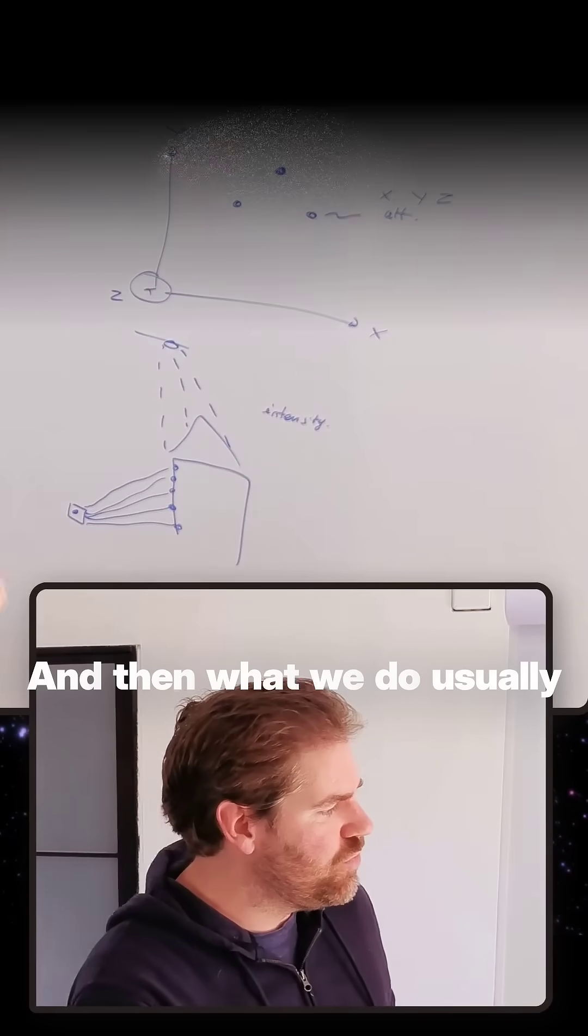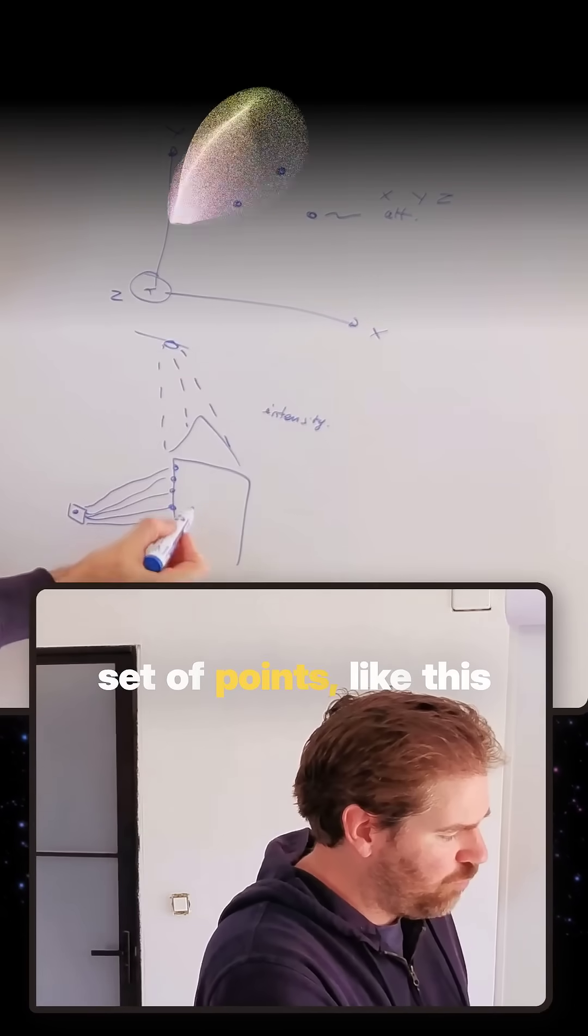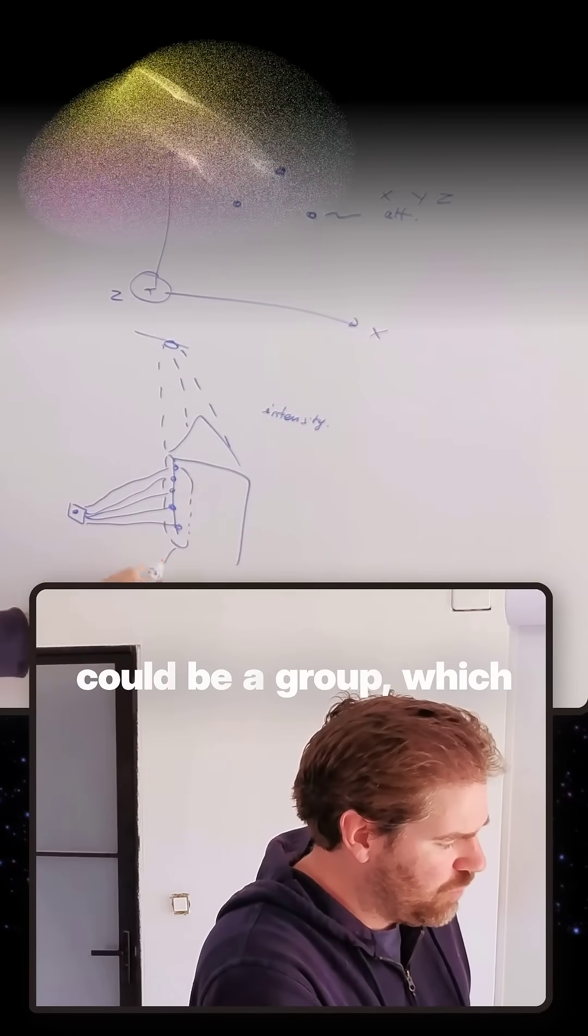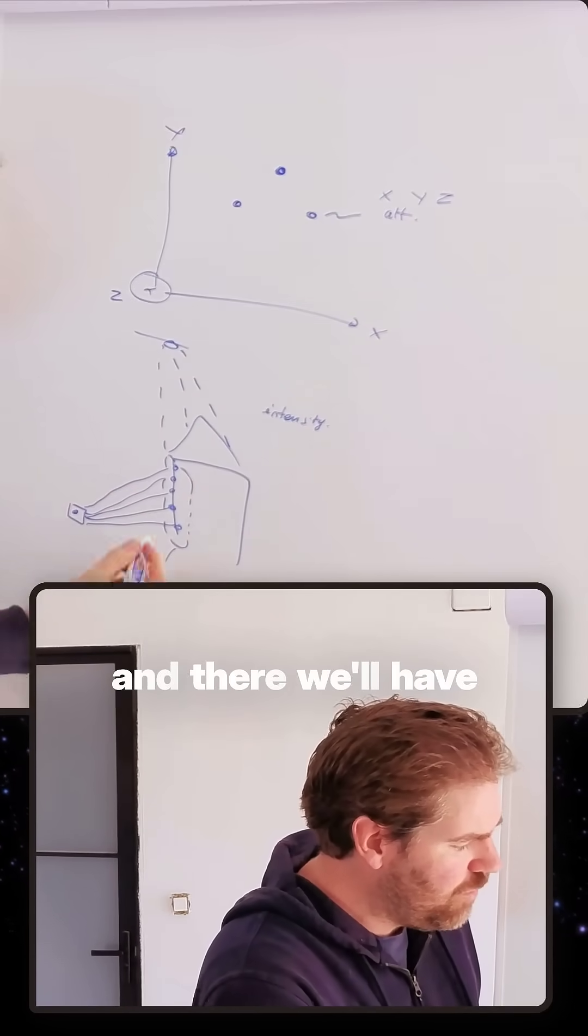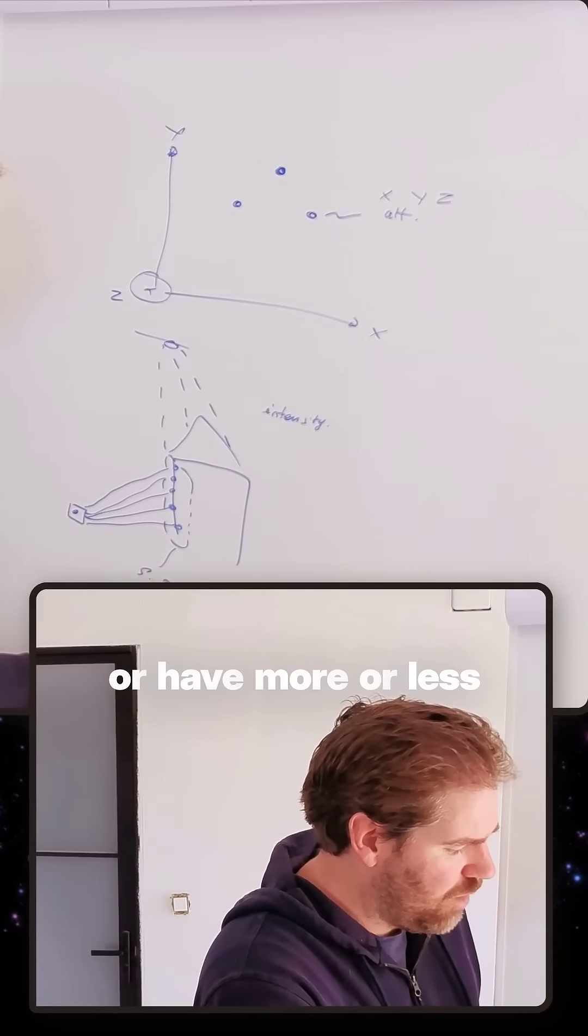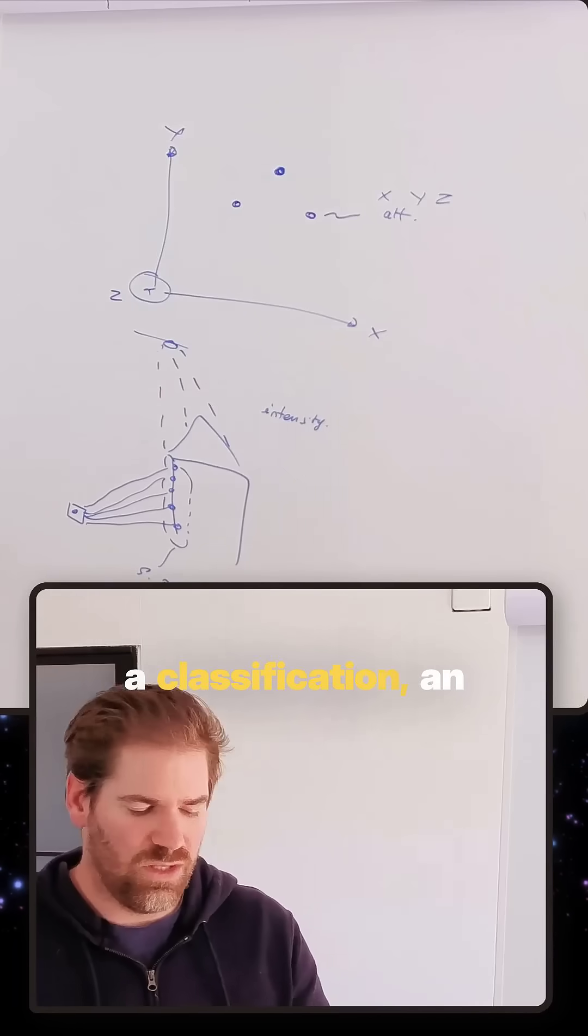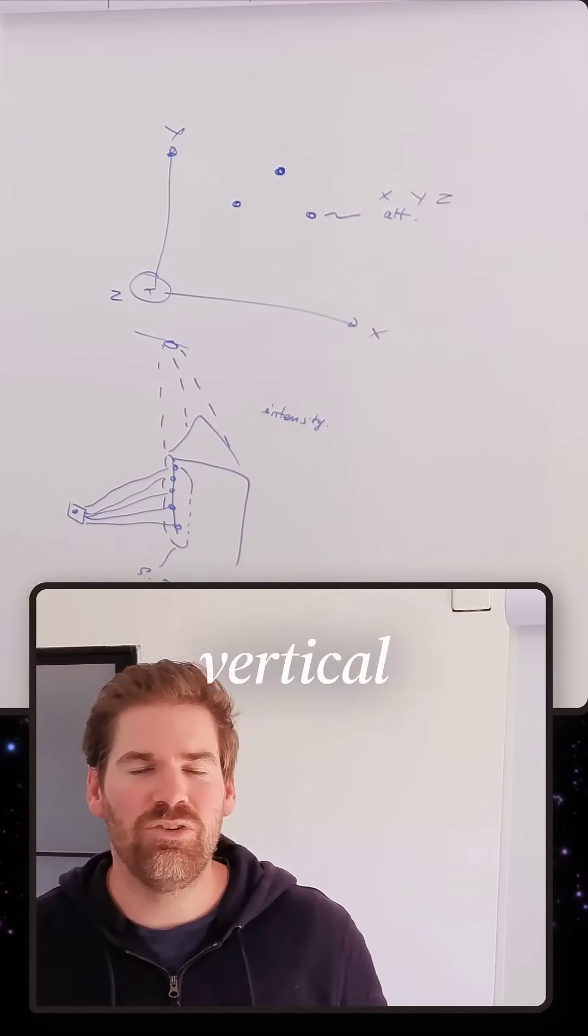At the point level. And then what we do usually is we'll try to group sets of points. Like this could be a group, which could be a semantic patch. And there we'll have an attribute of planarity or have a classification and identification that it's more or less a vertical structure.